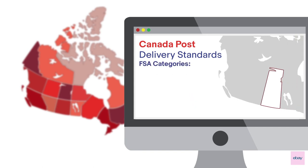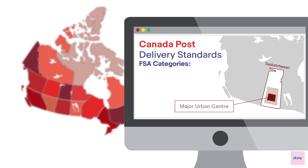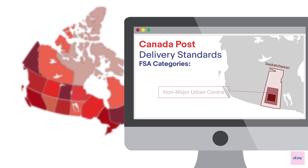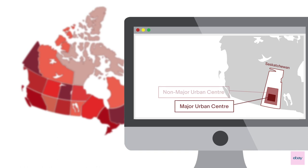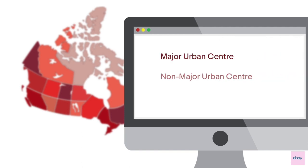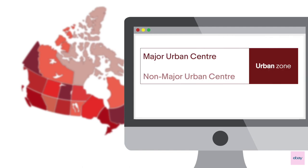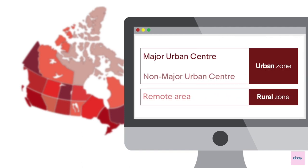Depending on the population density, each FSA is categorized into one of the following: major urban centre, non-major urban centre, and remote area. Since the delivery dates and shipping costs for major and non-major urban centres are relatively similar, they are both included in urban zones. Postal codes for remote areas are included in rural zones.